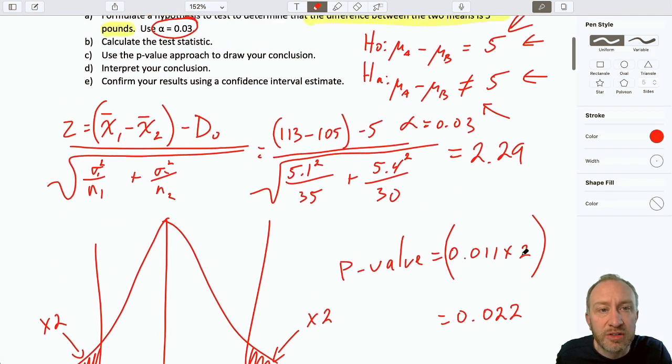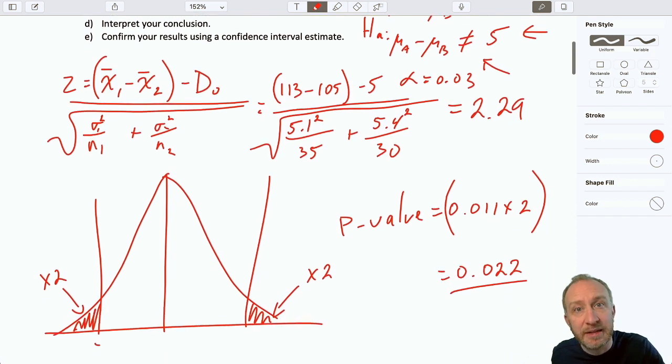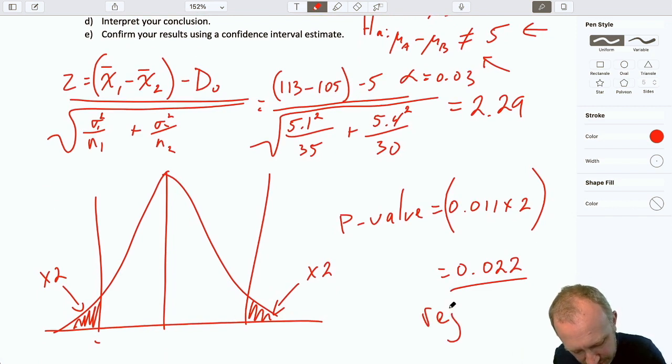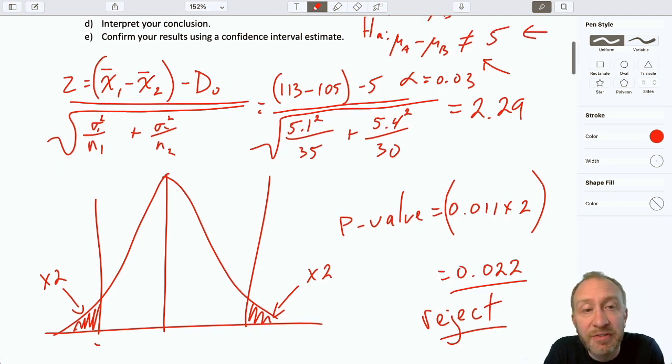Good. So, that brings us to our conclusion. Alpha is 0.03. With a p-value of 0.02, here I can comfortably reject. I say comfortably, but we are actually fairly close. 0.02 is pretty close to 0.03. But applying that rejection rule, our p-value is less than alpha. So, here we are definitely going to reject.